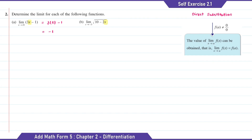For Question B, we're going to substitute x with negative 3 as x approaches negative 3. So this will be square root of 10 minus 2 times negative 3, which is equal to square root 16. Then the answer is equal to 4.